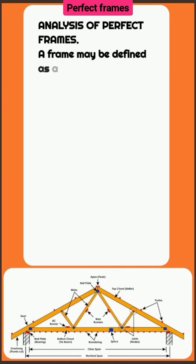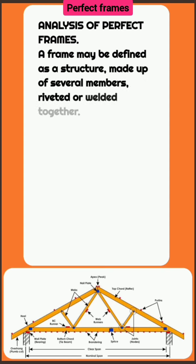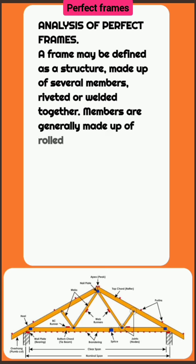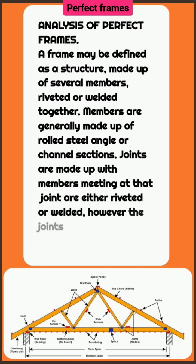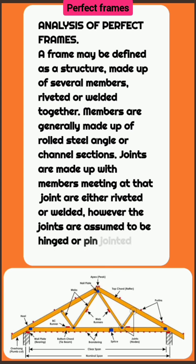Analysis of perfect frames. A frame may be defined as a structure made up of several members, riveted or welded together. Members are generally made up of steel angle or channel sections. Joints are made with members meeting at that joint, and members are either riveted or welded. However, the joints are assumed to be hinged or pin-jointed while analyzing a frame.